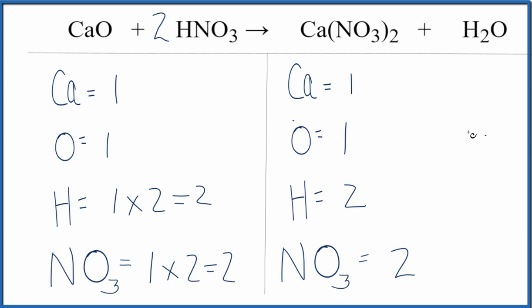This is Dr. B with the balanced equation for CaO plus HNO₃ yields Ca(NO₃)₂ plus H₂O. Thanks for watching.